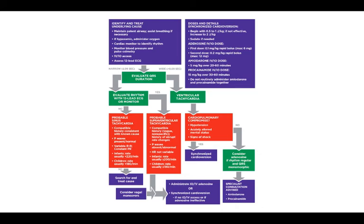If you assume it's ventricular tachycardia, assess for cardiopulmonary compromise by checking for hypotension, acutely altered mental status, and signs of shock. If that appears to be an issue, perform synchronized cardioversion. If not, consider giving a dose of adenosine if the rhythm is regular and the QRS complex is monomorphic. You may need specialist consultation, and possibly administer amiodarone or procainamide.